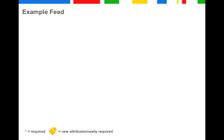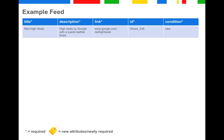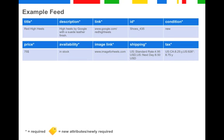You might wonder how to implement all these attributes into a real feed. Let's look at this example. All starred attributes are required. Providing information on title, description, link, ID, and condition works as usual. Then there is price, the new availability attribute, image link which is now required, shipping, and tax which are also required.